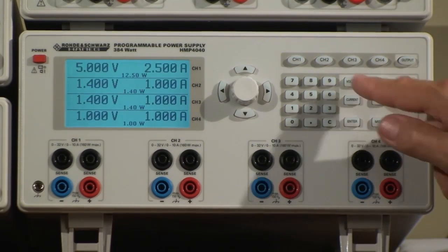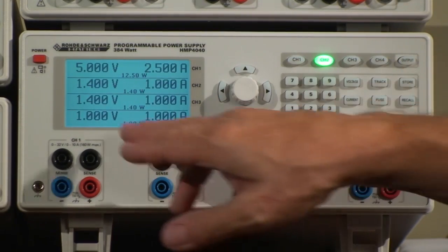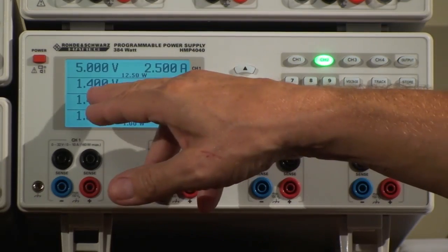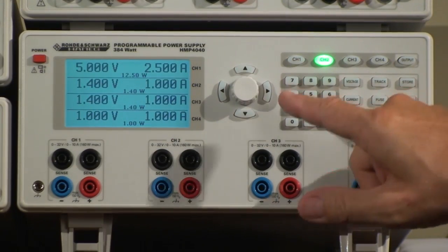If I now want to say on channel 2 I have another voltage, 1.4 volts with a maximum current of 1 amp.